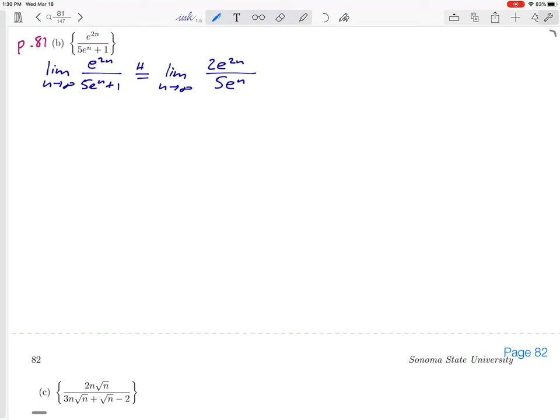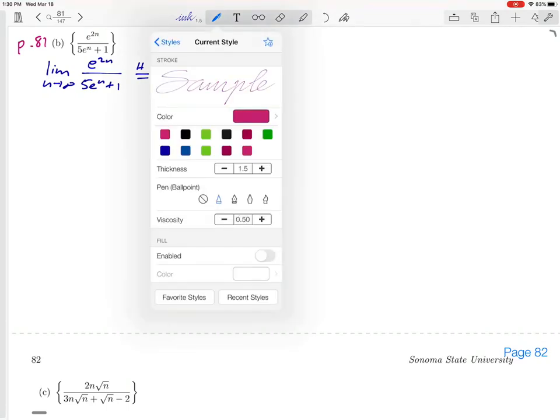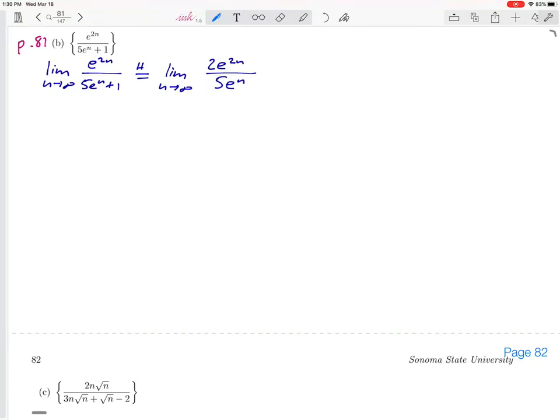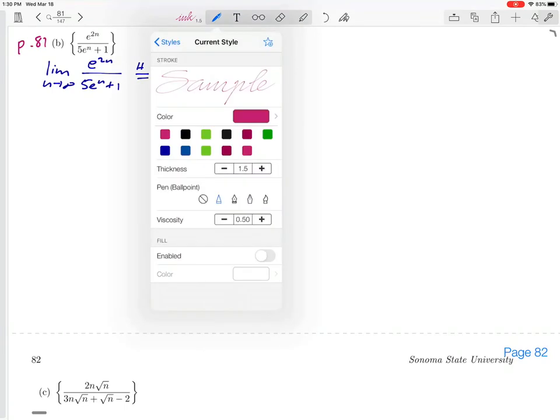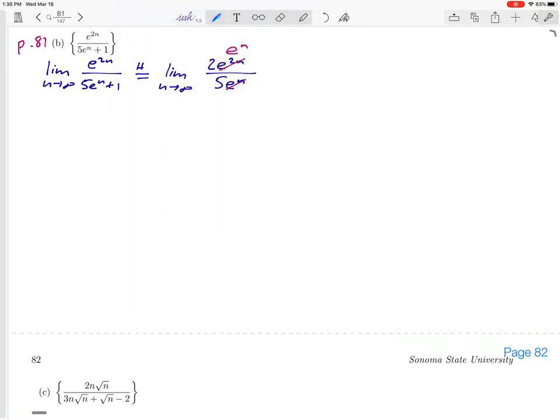At this point we can do a little bit of algebraic cancellation here. So e to the 2n over e to the n, if we cancel those with each other, we're going to get one extra e to the n in the top because one of those e to the 2n cancels with the e to the n that was in the bottom previously. And that turns our limit into just the limit of 2e to the n over 5.